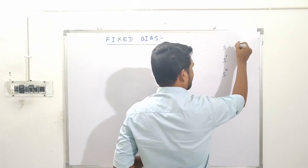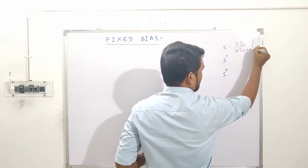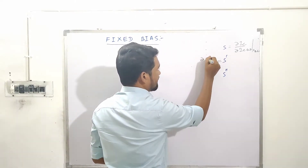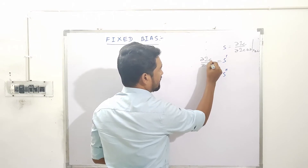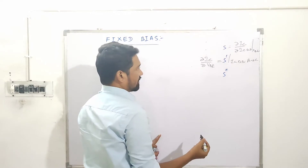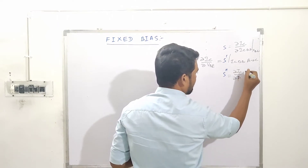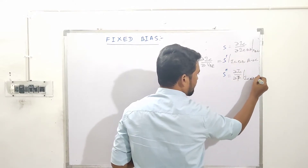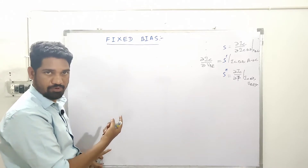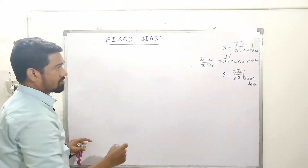So what is S actually? It's the change in IC due to change in ICBO, considering VBE and beta as constants. And what is S dash? It's the change in IC due to change in VBE, considering ICBO and beta as constants. And what is S double dash? According to the definition, it's the change in IC due to change in beta, considering ICBO and VBE as constants. We need expressions for S, S dash, and S double dash, and also establish relationships between all three.